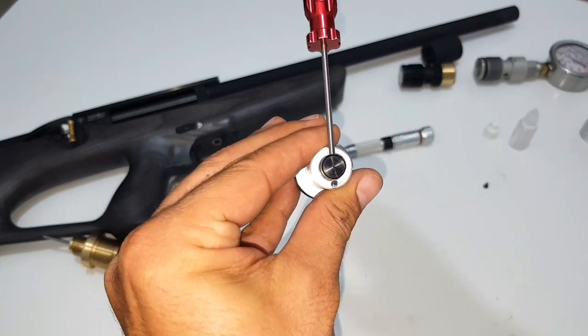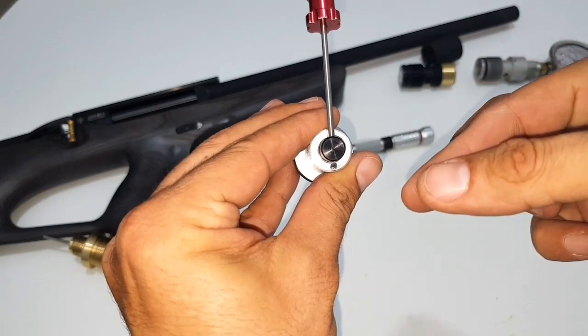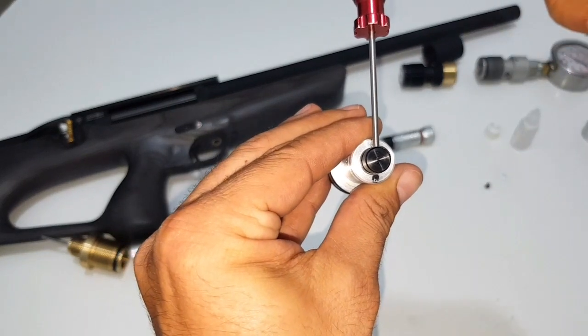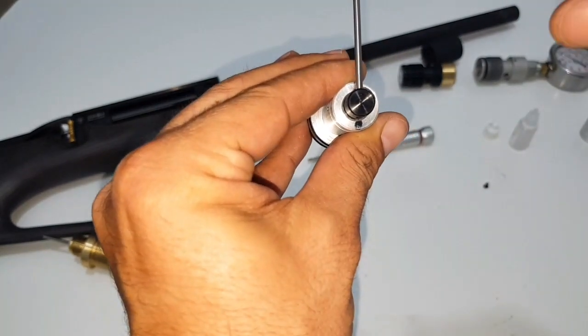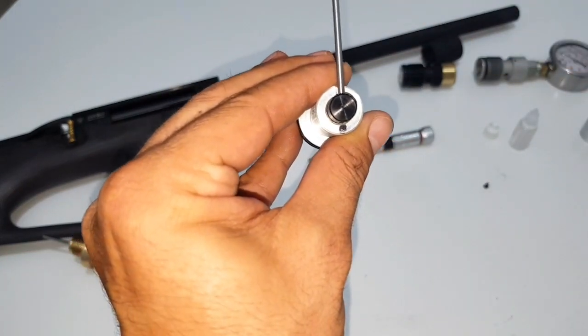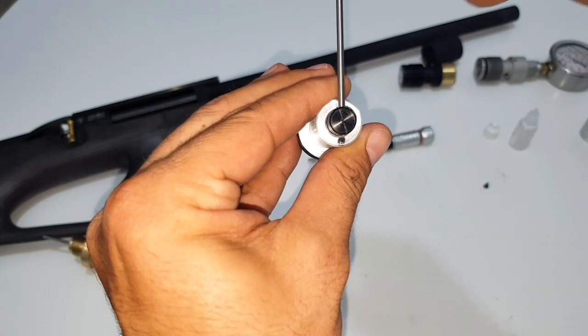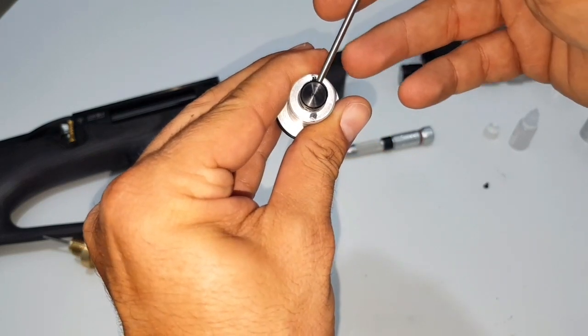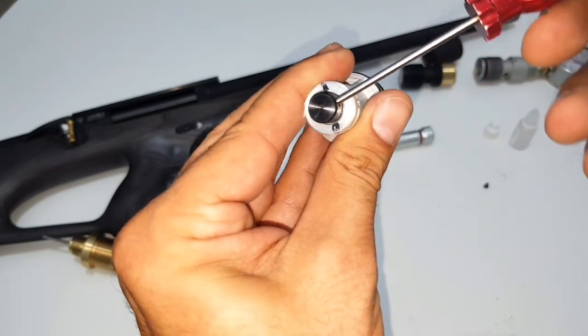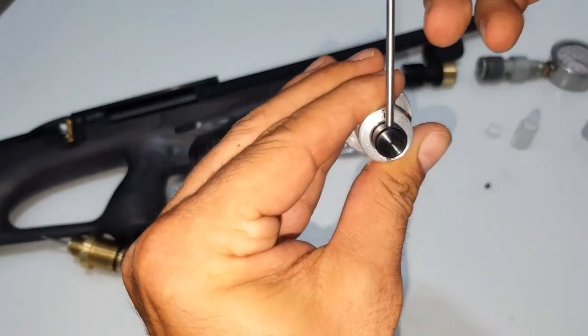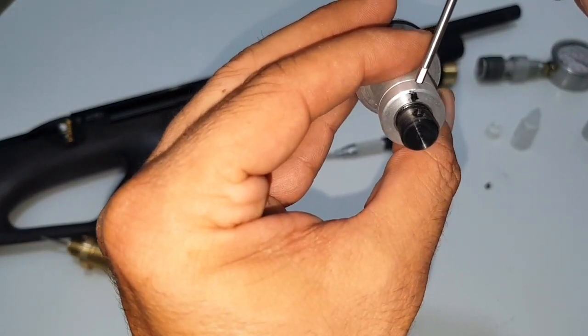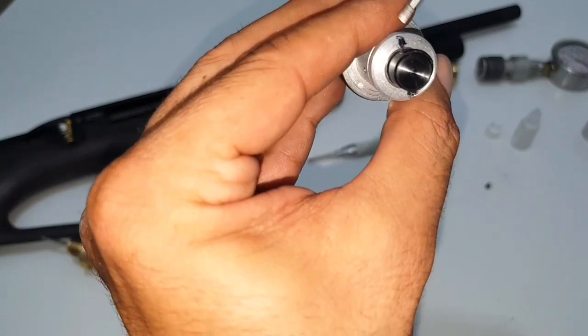If you place any tool here and you turn, focus very well, this regulator clockwise, you will be able to reduce the reg pressure. By turning this reg clockwise, you will be decreasing the reg pressure. If you turn it counterclockwise, you will be increasing the reg pressure. By turning a quarter, I guess, or a bit less like I'm doing here.